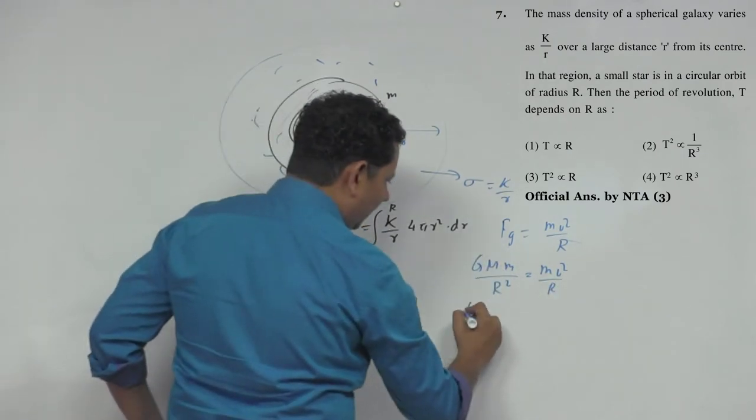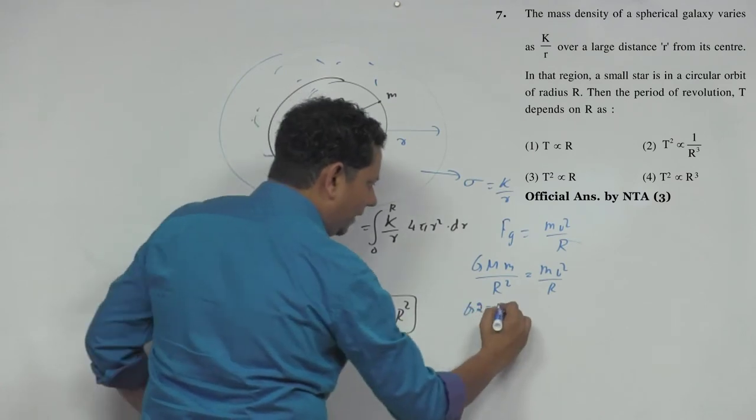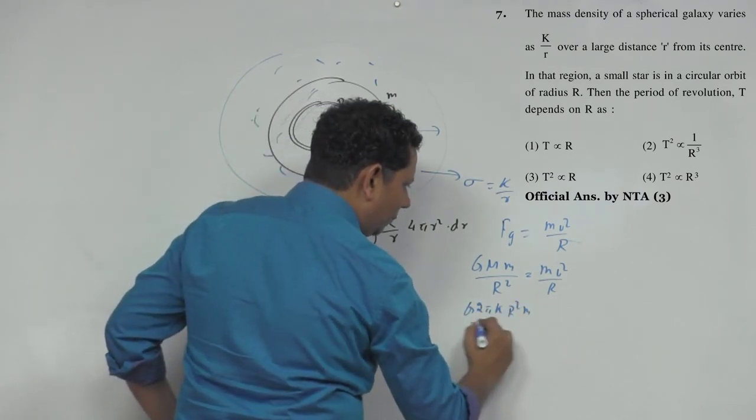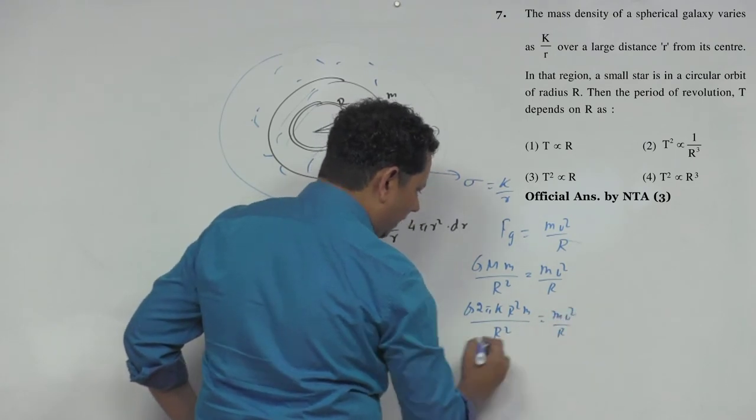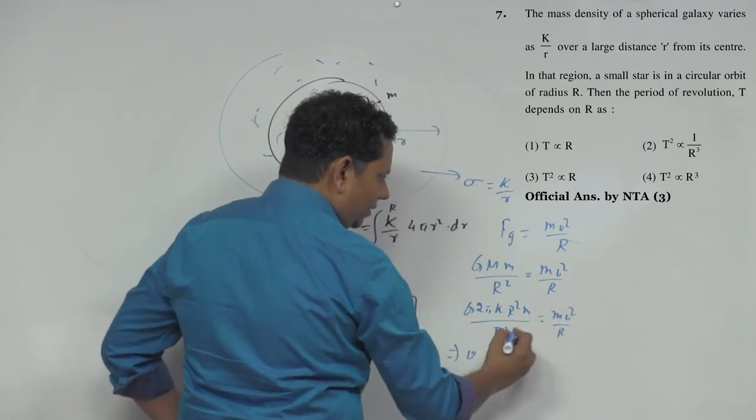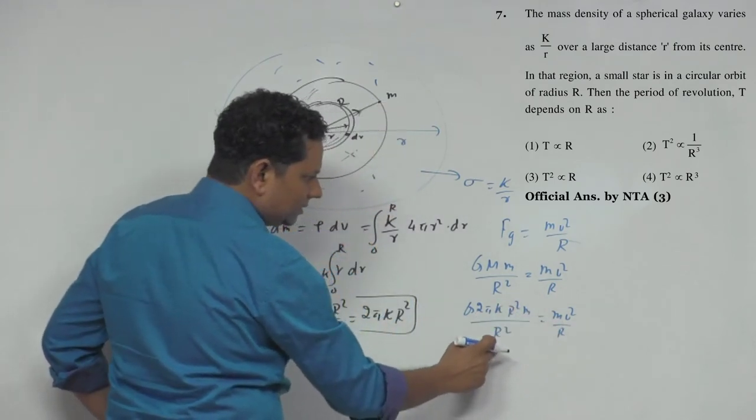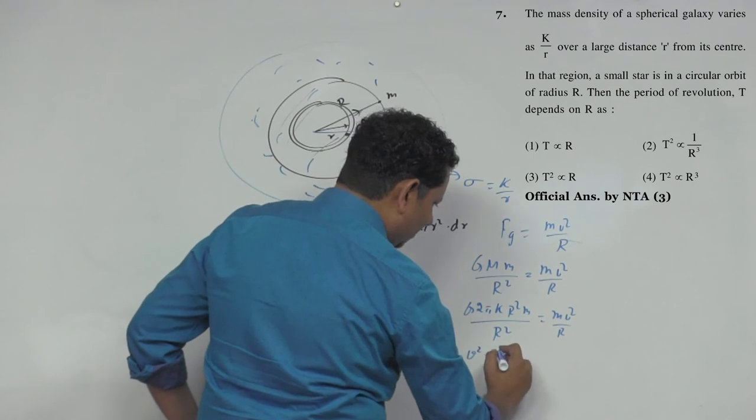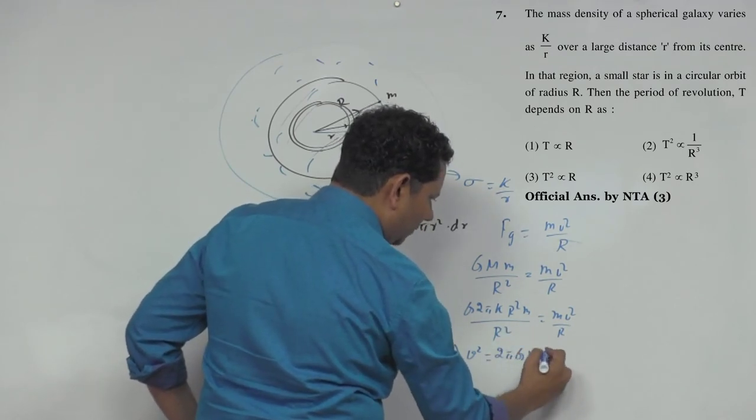So gravitational force GMm divided by r² equals mv²/r. Putting the value of M as 2πk r², we get G times 2πk r² times m divided by r² equals mv²/r. This gives us v² - one r² cancels.